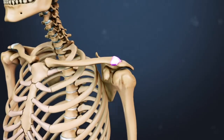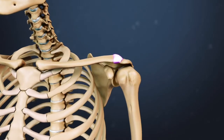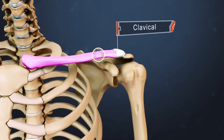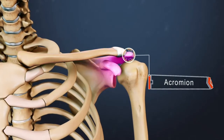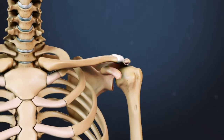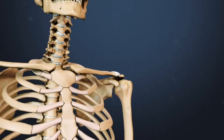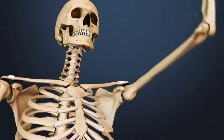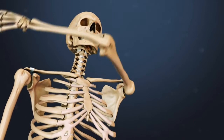The acromioclavicular joint, sometimes called the AC joint, is the point where the clavicle or collarbone meets the acromion, which is the highest part of the scapula or shoulder bone. While the clavicle and acromion do not move much in relation to one another, the AC joint allows for raising the arm over the head, as well as moving the arm across the body.